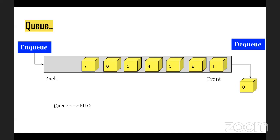A queue generally supports two operations: enqueue and dequeue. Enqueue adds a new element at the back, and dequeue removes one element from the front. So if you have messages 0, 1, 2, 3, 4, 5 and you enqueue a new message like 8, it gets added at the back.